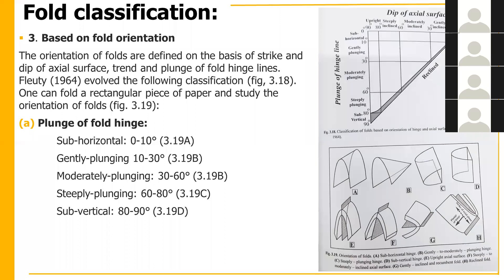Now we talk about orientation of folds. This is very important. When we characterize folds in the field, their orientation is defined on the basis of the strike and dip of the axial surface, and the trend and plunge of hinge lines. The figure on the right shows hinge line and axial surface relationships.